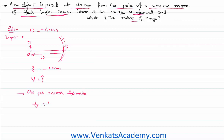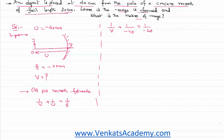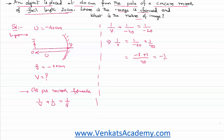The mirror formula is 1/v + 1/u = 1/f. Applying the sign convention: I don't know v so no sign is applied yet; u = -40; f = -20. Substituting: 1/v + 1/(-40) = 1/(-20). Rearranging: 1/v = 1/(-20) + 1/40. The LCM is 40, giving us (-2 + 1)/40, which equals -1/40.